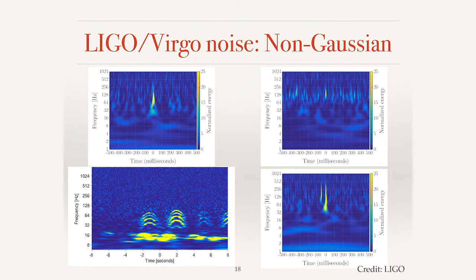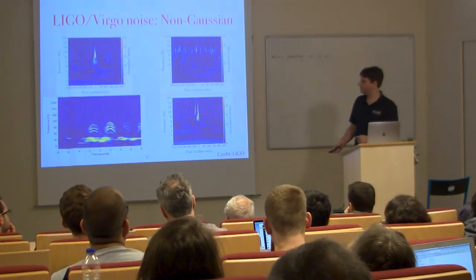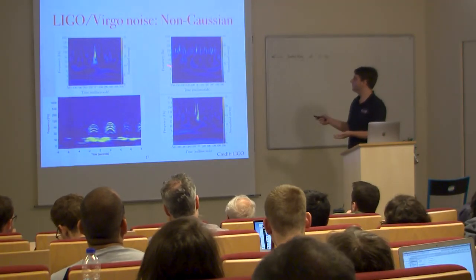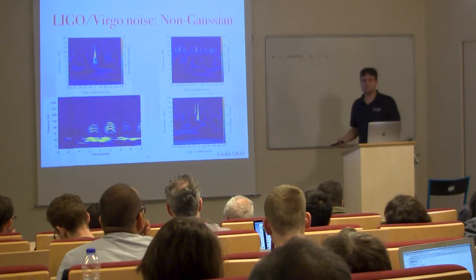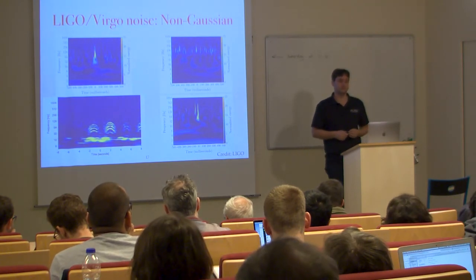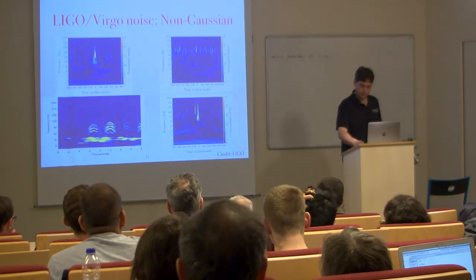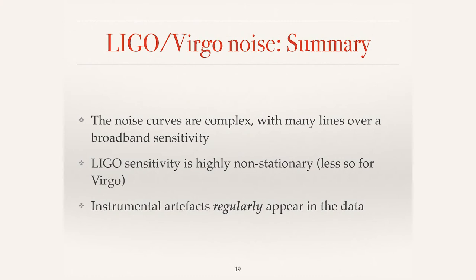The final important feature of our data is that it is not Gaussian. Match filtering is very nice in Gaussian noise but struggles when the noise isn't Gaussian. Here are some examples of instrumental artifacts or glitches that occurred in the O1 observing run — they take very different forms, from arches to things that might look a bit like compact binary mergers. Trying to understand and remove these from the data is also a field of ongoing effort.